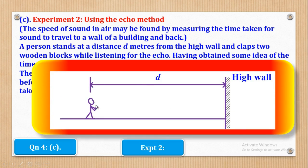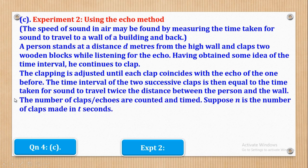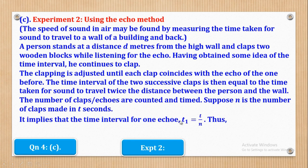This person continues to clap such that each clap coincides with the echo. The number of claps and time intervals are counted and timed. Suppose N is the number of claps made in T seconds — the time interval for one echo equals T over N. Therefore the speed of sound in air equals the distance traveled by one echo divided by the time taken: distance is 2D and time is T/N, giving V = 2DN/T.